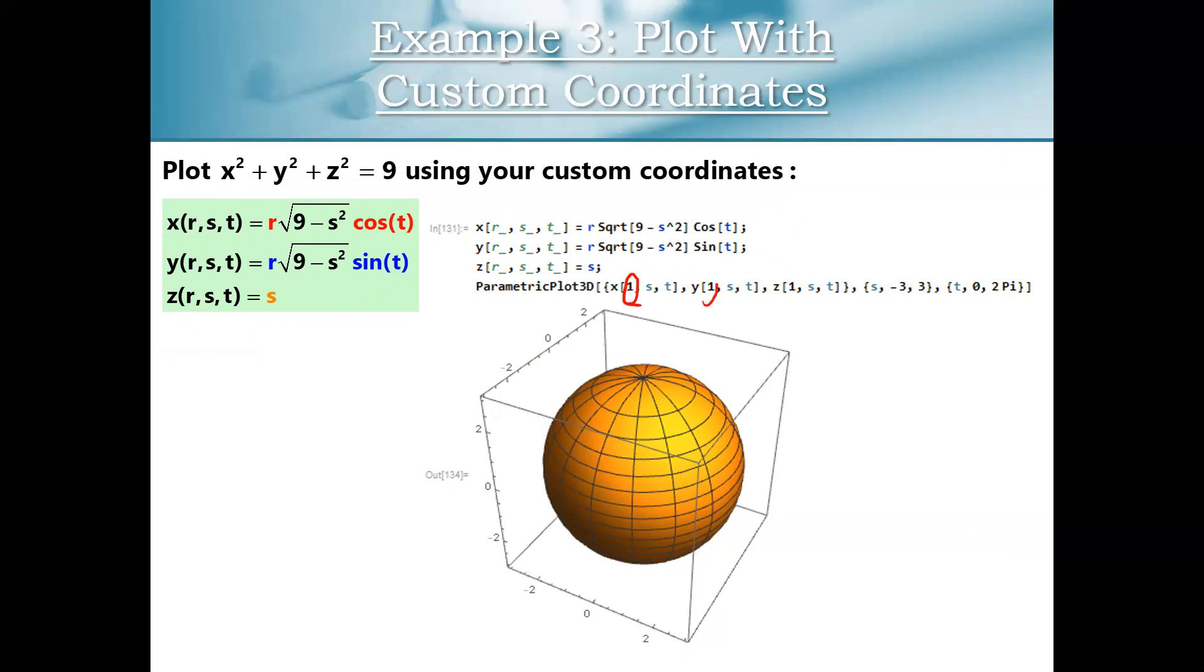So you can see for R, I've plugged in R equals one in each of those positions there. R equals one. That'll give me the outer skin of my sphere. So this is a pretty cool way, using custom coordinates, is a really cool way to plot some interesting looking surfaces and some interesting looking surfaces that enclose a similarly interesting solid region. So let's try that out.